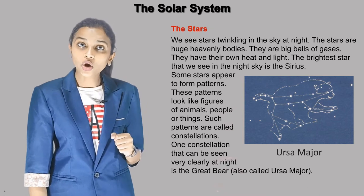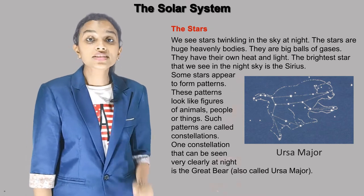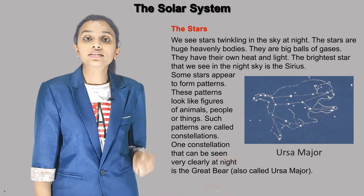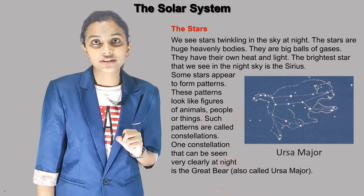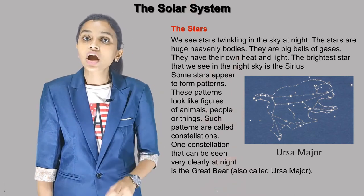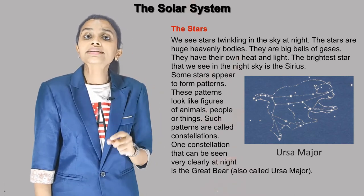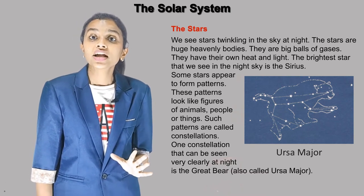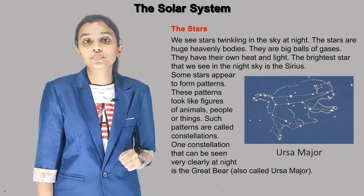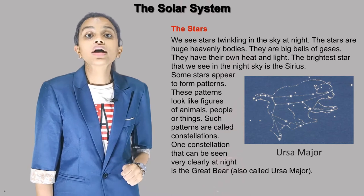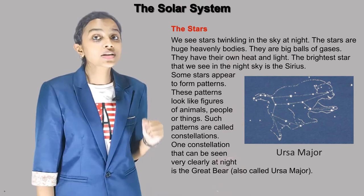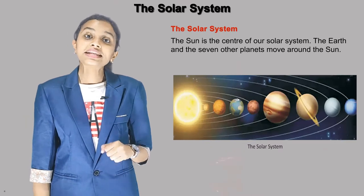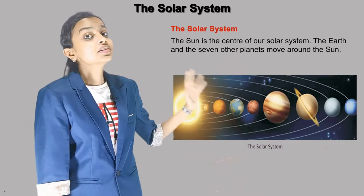Such patterns are called constellations. One constellation that can be seen very clearly at night is the Great Bear, also called Ursa Major. Now the next is the solar system.